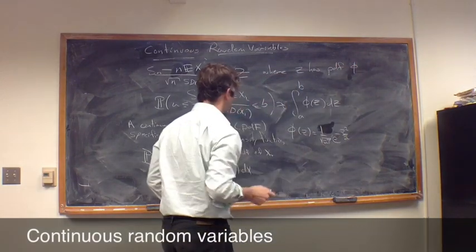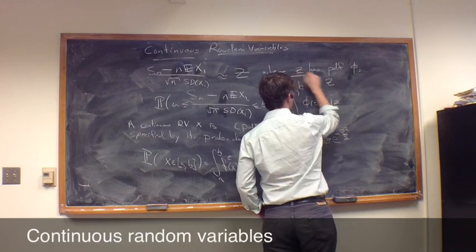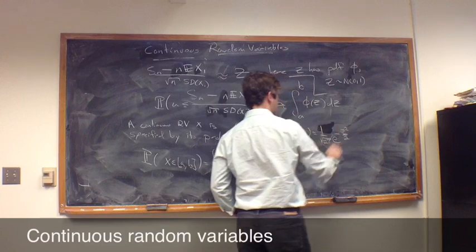Where z has pdf phi. And in general, we'll just say that z is distributed normal 0, 1, which means that it has this pdf phi.